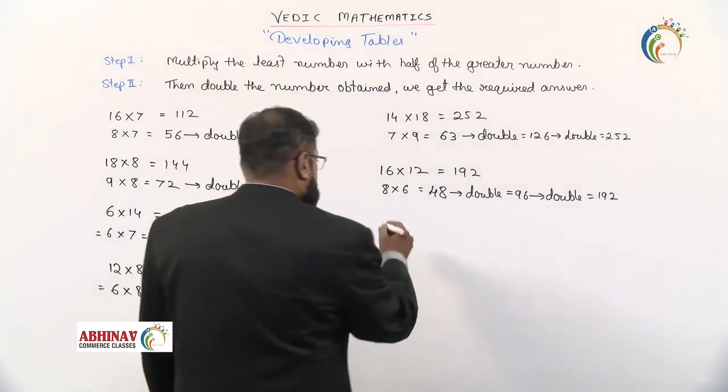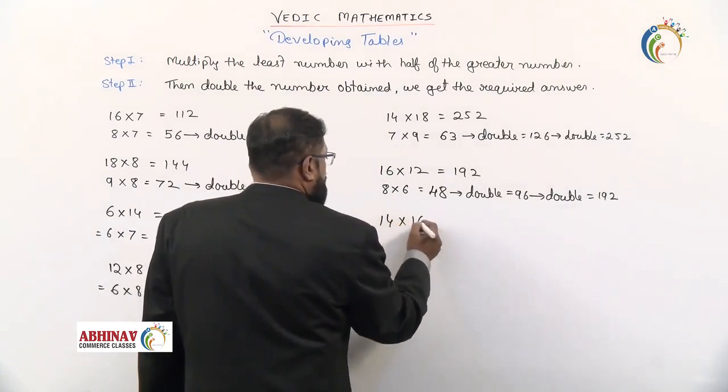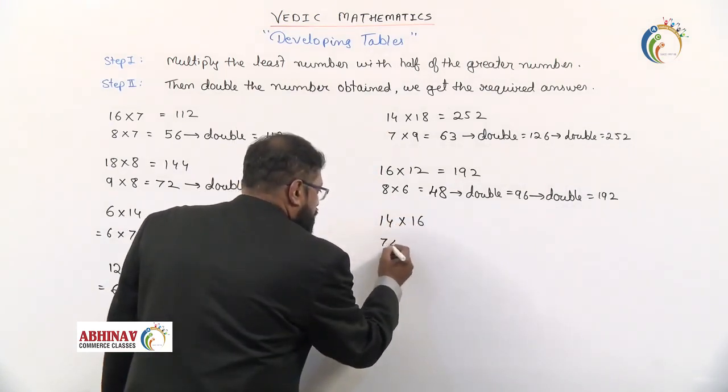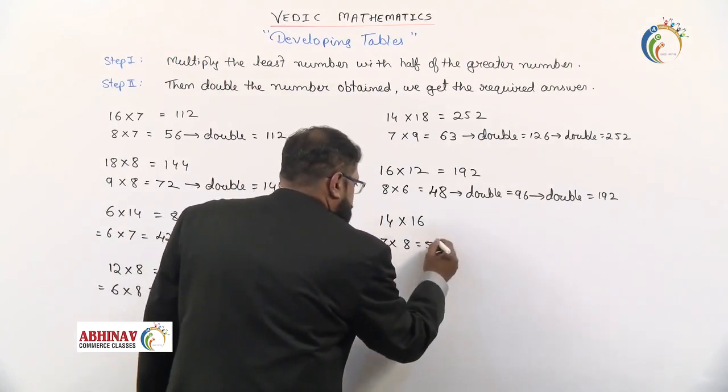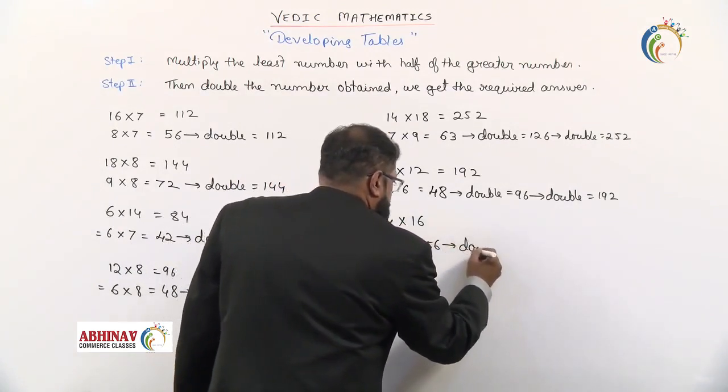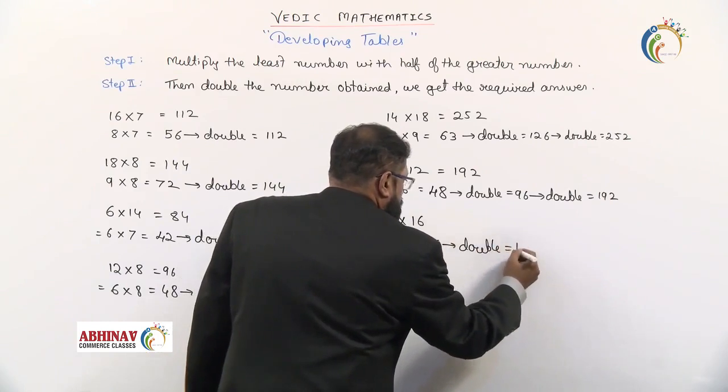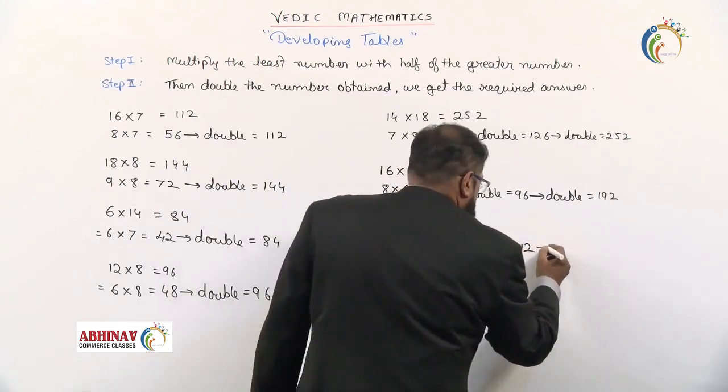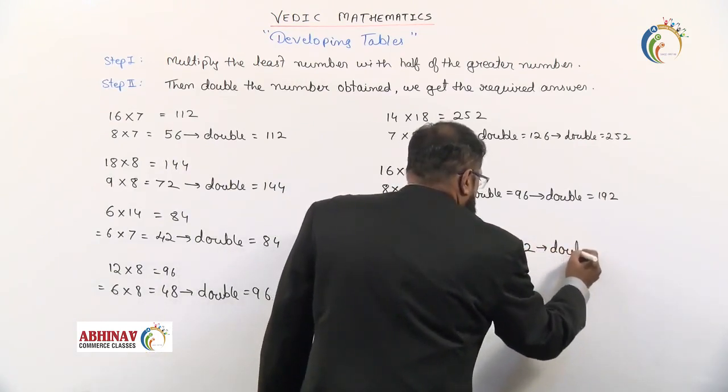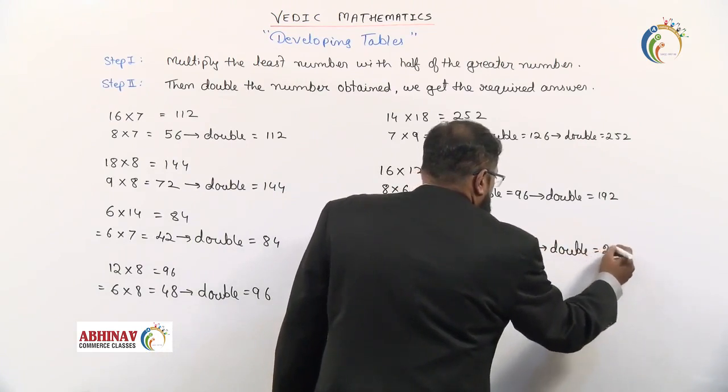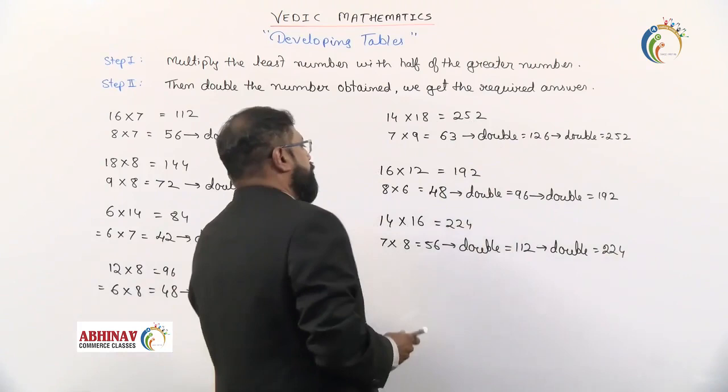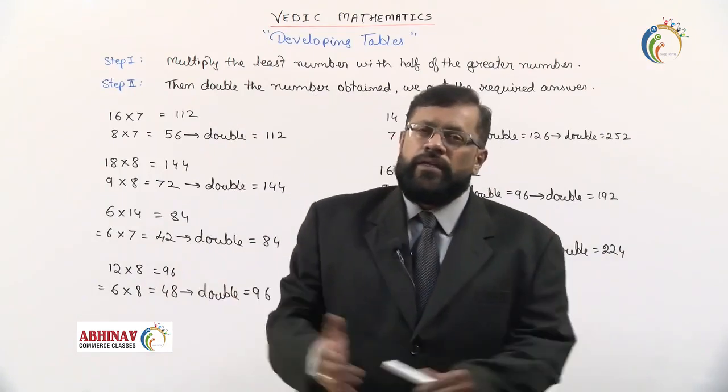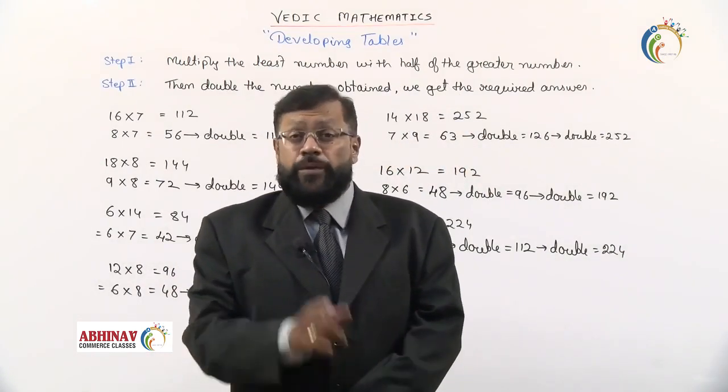Take up one more example. Say 14, we'll multiply by 16. Half of 14 is 7, half of 16 is 8. So 7 into 8 is 56. We double it, 112. We double it, what we get is 224. So 14 into 16 what we get is 224. That's all. This is how we develop the tables with even numbers.